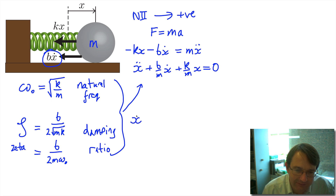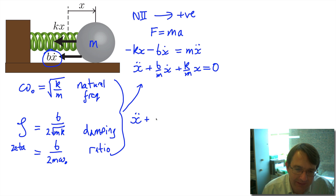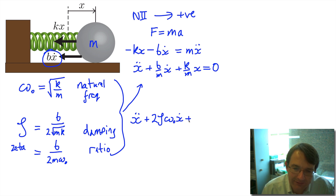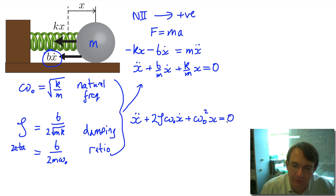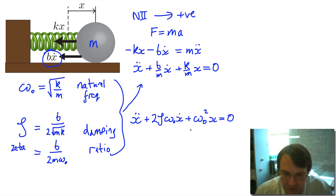When we rewrite the differential equation using omega-naught and zeta, x-double-dot is unchanged, but b/m becomes two times zeta times omega-naught, so the equation becomes: x-double-dot plus two zeta omega-naught times x-dot plus omega-naught squared times x equals zero. This is a slightly different way of writing our differential equation, now expressed in terms of omega-naught and zeta.